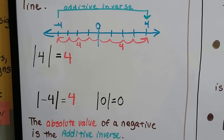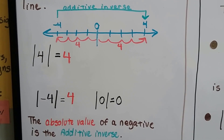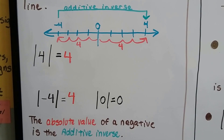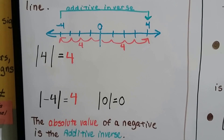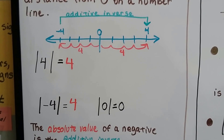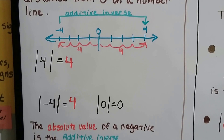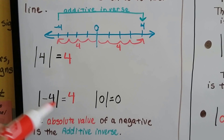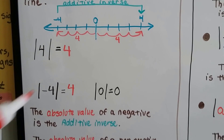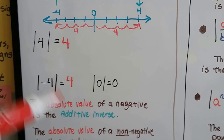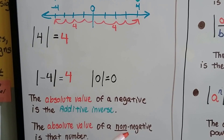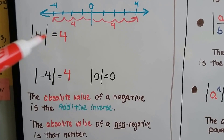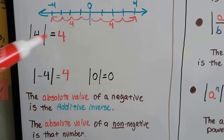So the absolute value of a negative is its additive inverse — the opposite. The absolute value of negative 4 is positive 4; that's the additive inverse. And the absolute value of a non-negative, which just means it's positive, is that number itself — it's 4.